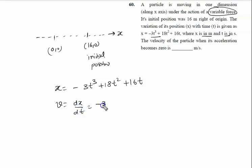Differentiating: 3t³ gives 3t², 18t² gives 2t, plus 16. So velocity is given by minus 9t² plus 36t plus 16.